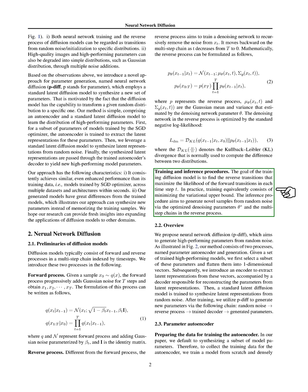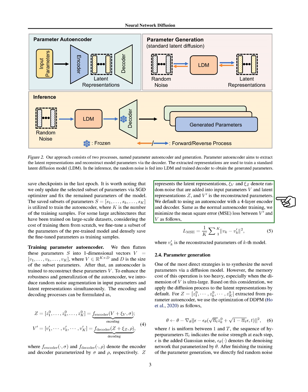The encoding and decoding processes are parameterized by specific variables, and the latent representations are denoted by another variable. Random noise is added to both the input parameters and the latent representations, and the reconstructed parameters are obtained. We typically use an autoencoder with a four-layer encoder and decoder and minimize the mean square error loss between the reconstructed parameters and the original parameters to train the autoencoder.